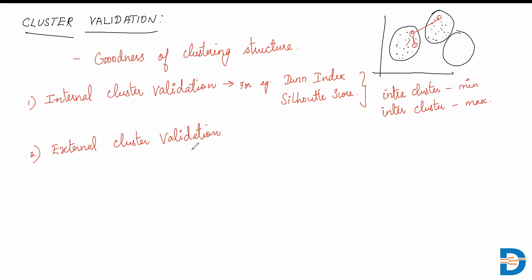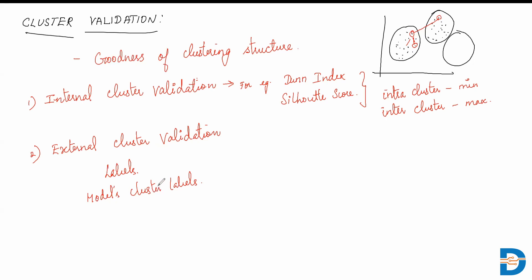In the case of external cluster validation, we refer to external data to check how good the clusters are. For example, when you have actual labels and you have the model's cluster labels, and you compare them — you are referring to external data to see whether the clusters are properly formed or not, and how many wrong data points we have in each cluster. This kind of validation is called external cluster validation.